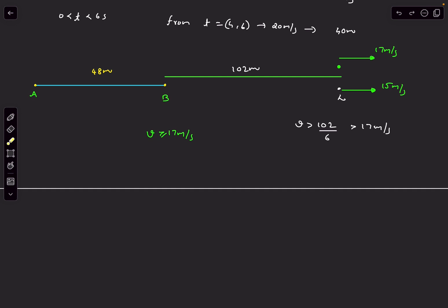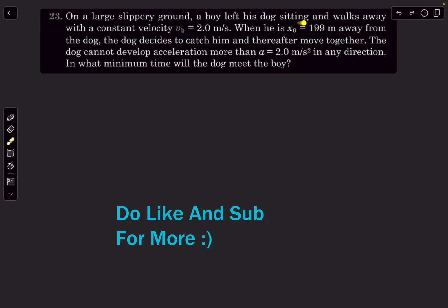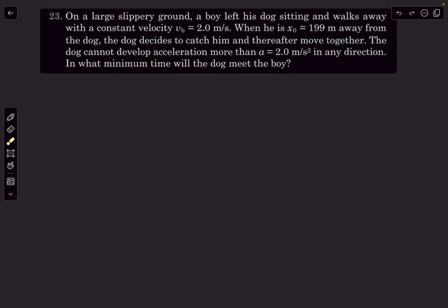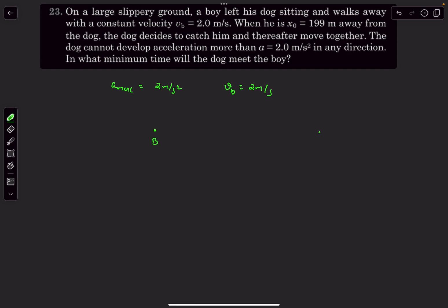Now let's move on to the next question. A boy leaves his dog sitting on a large slippery ground and walks away at a constant velocity of 2 m/s. When he is 199 meters away, the dog decides to catch him and they must meet. The dog cannot develop acceleration more than 2 m/s² in any direction. In what minimum time will the dog meet the boy? The boy travels at constant speed of 2 m/s and the dog's maximum acceleration is 2 m/s².